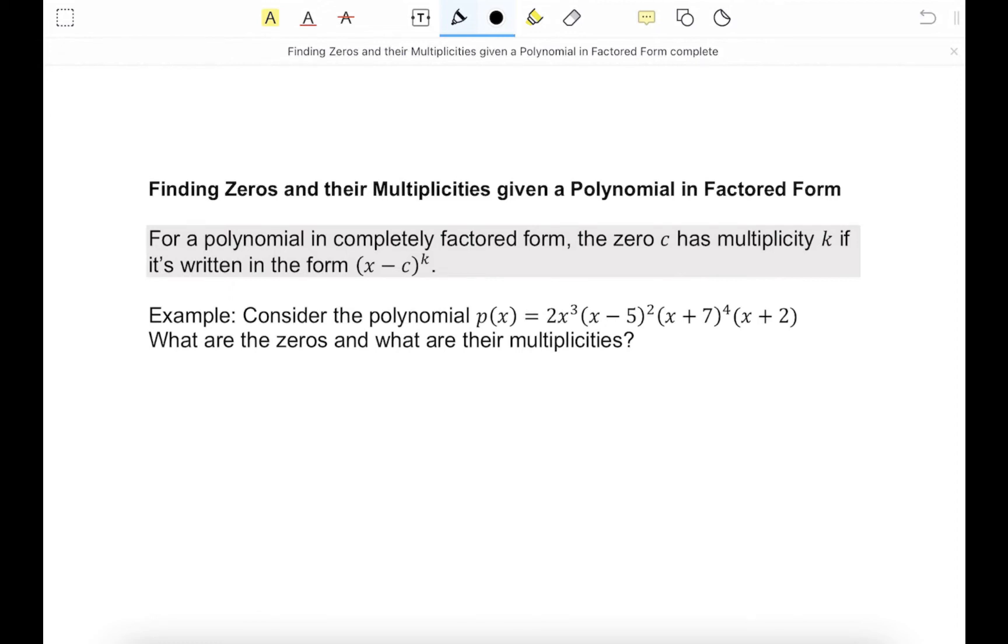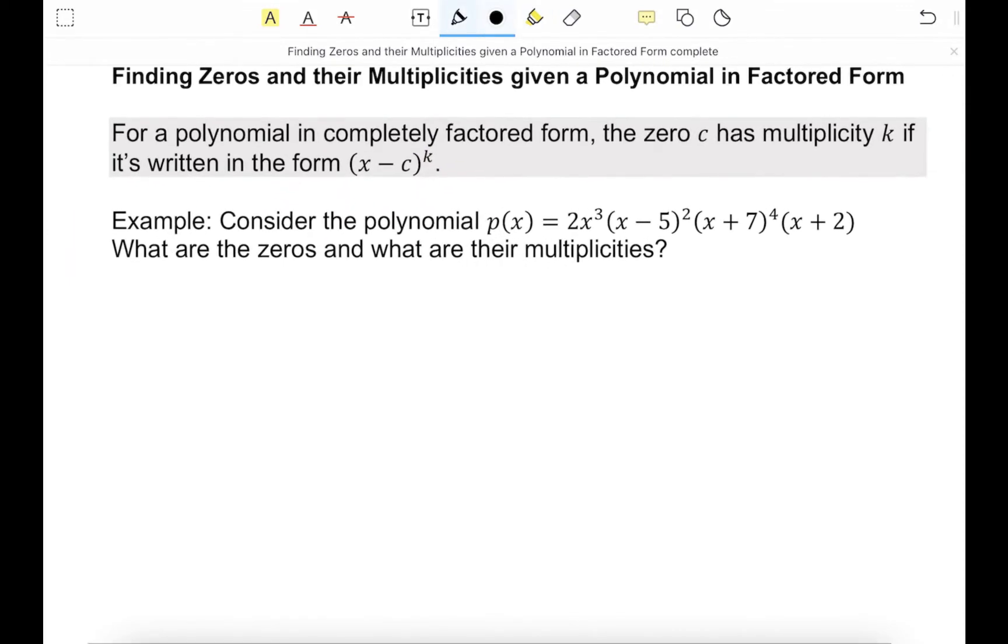The multiplicity of a zero is the number that it's raised to, that k value there. And we can determine the zeros and their multiplicities by looking at the polynomial itself.